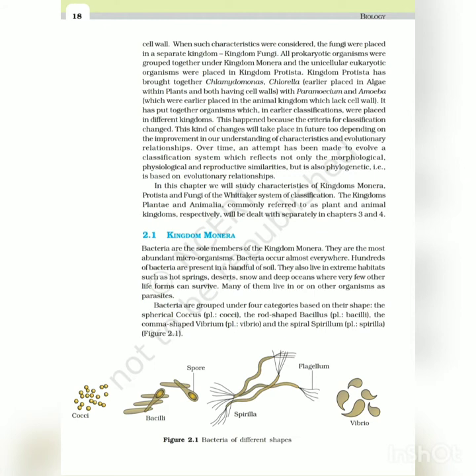Over time, an attempt has been made to evolve a classification system which reflects not only the morphological, physiological and reproductive similarities, but is also phylogenetic - based on evolutionary relationships. In this chapter we will study characteristics of kingdoms Monera, Protista and Fungi of the Whittaker system of classification. The kingdoms Plantae and Animalia, commonly referred to as plant and animal kingdoms respectively, will be dealt with separately in chapters 3 and 4.